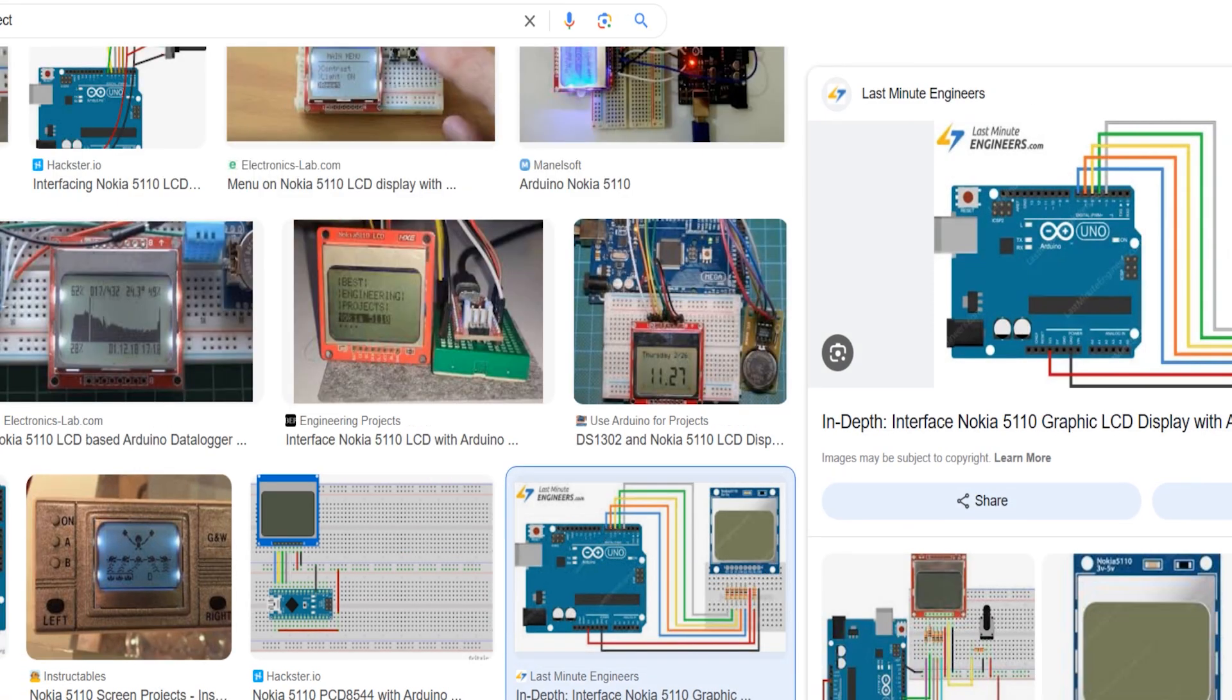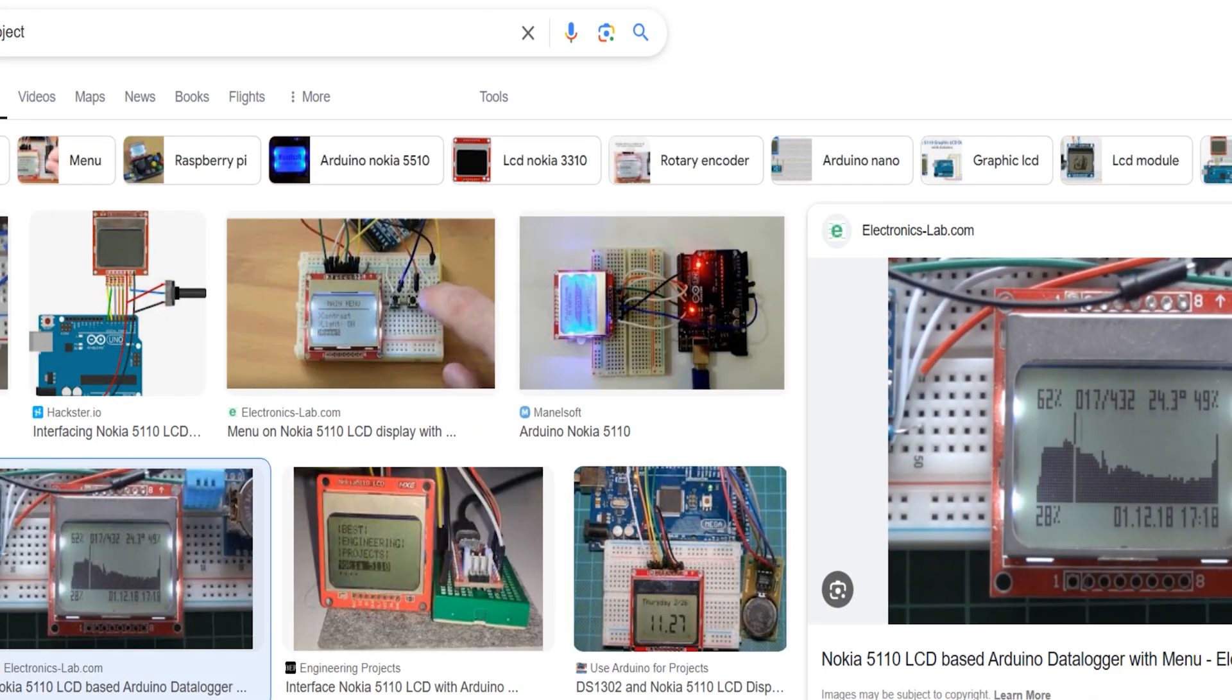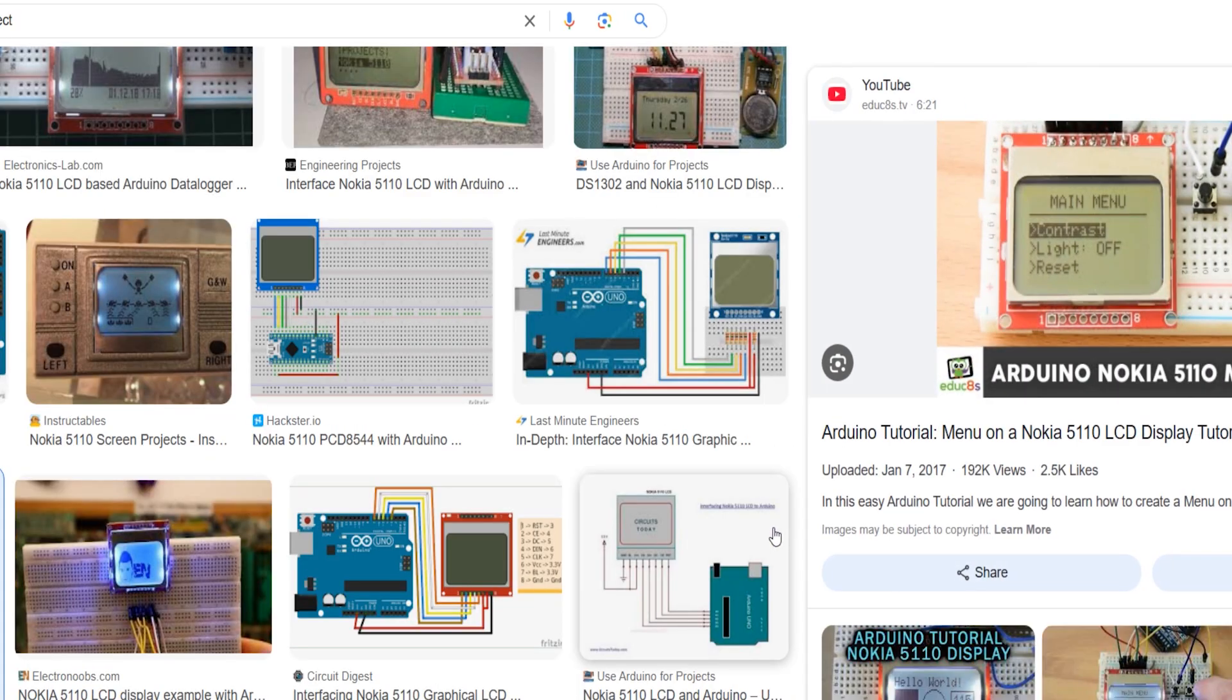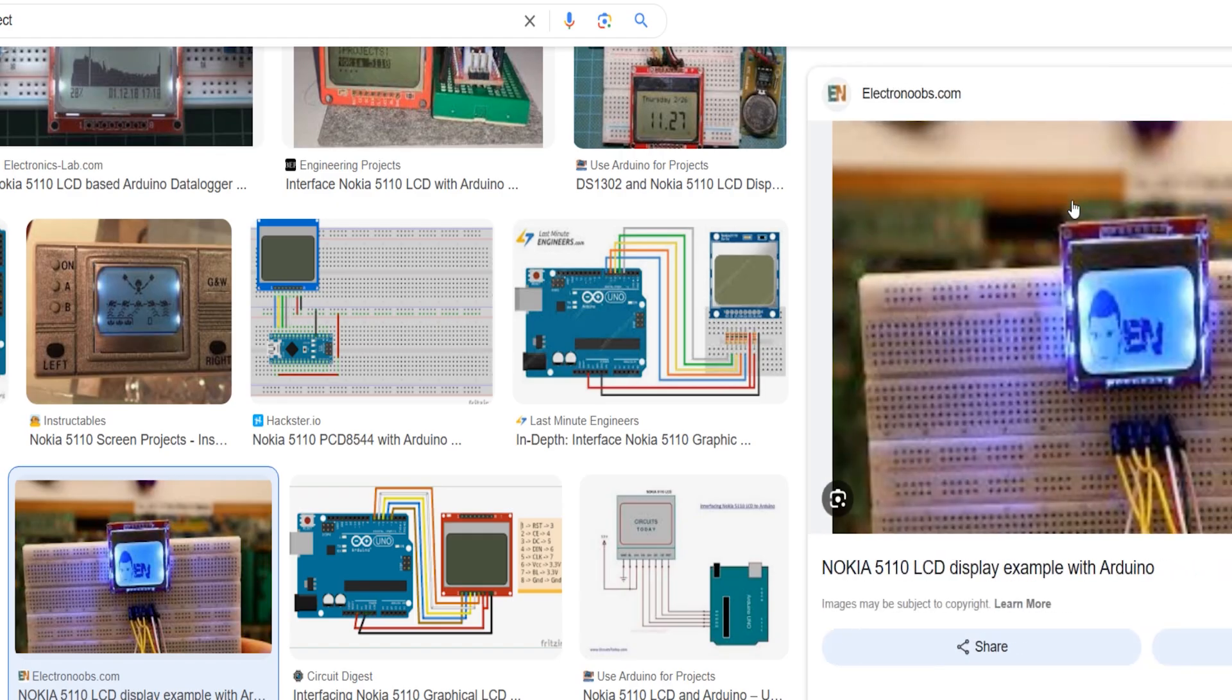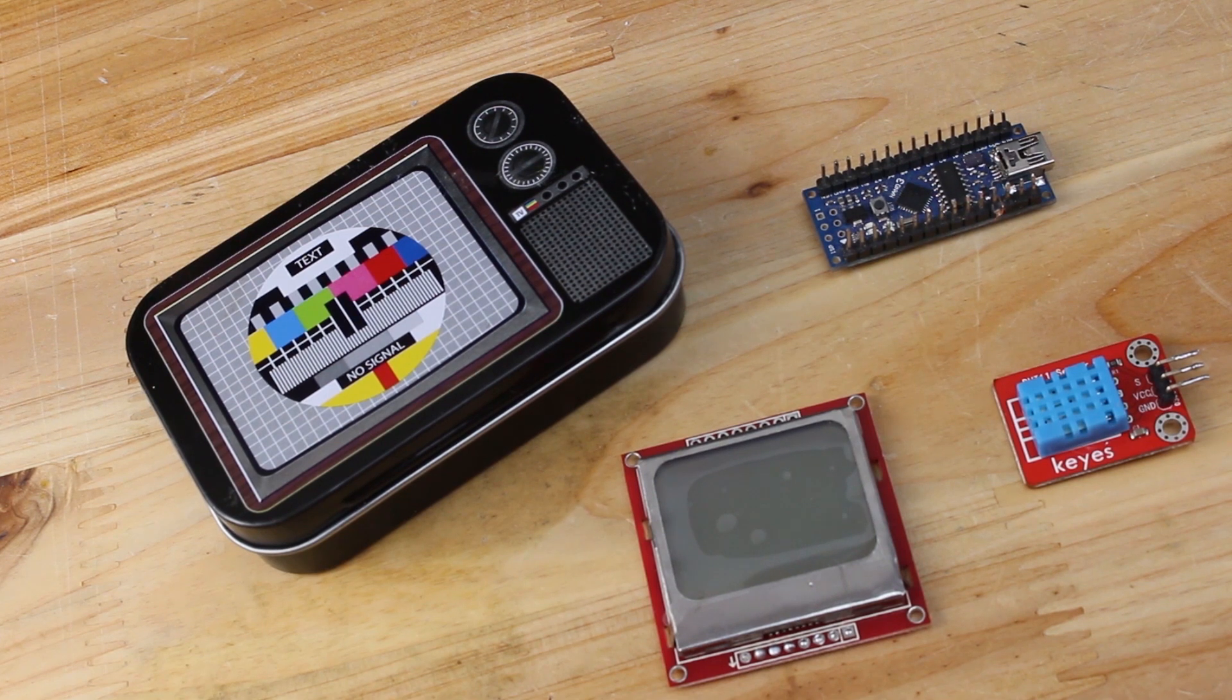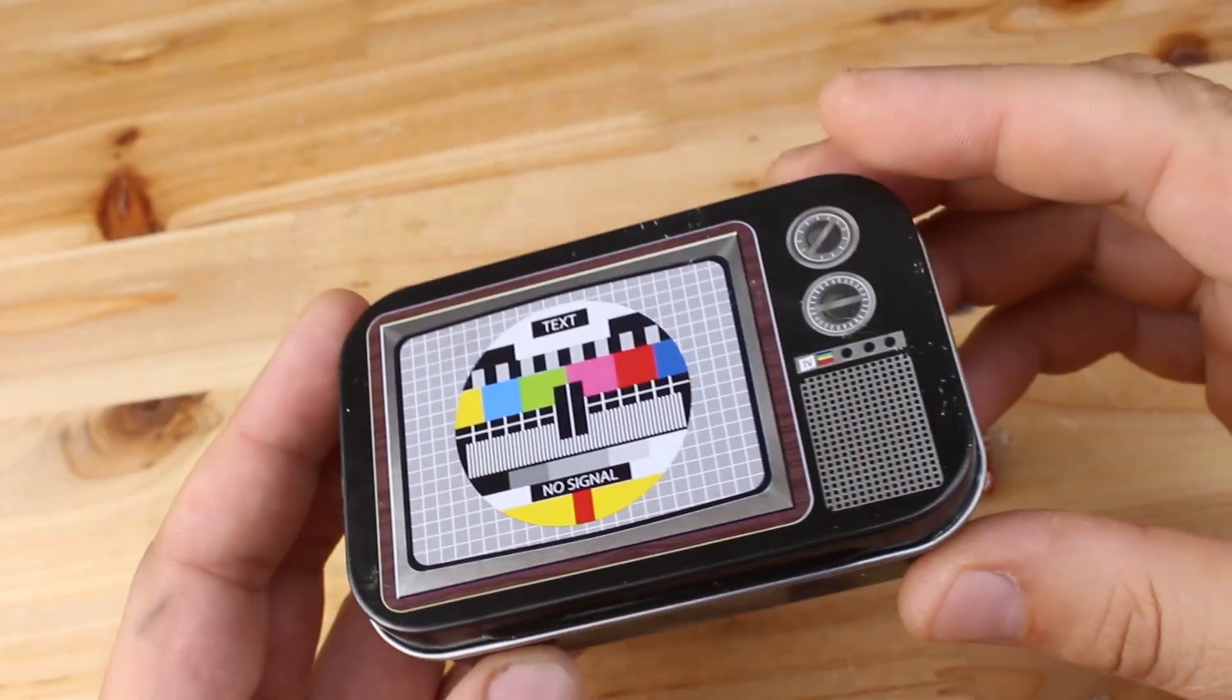In the next few minutes you're going to watch my old project that is using this display to make a simple thermometer. So watch it, please like, share and subscribe to my channel. To make this project you will need only three modules: the Arduino Nano board, the DHT11 sensor, and Nokia LCD display.